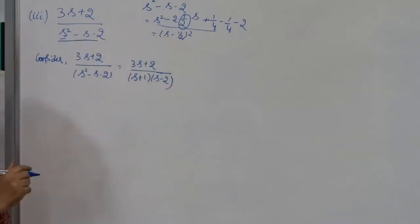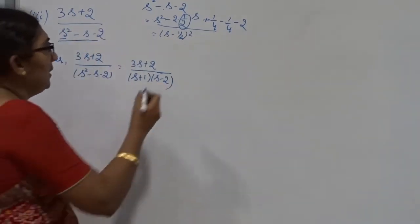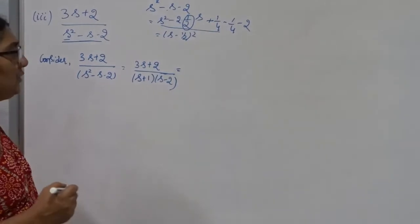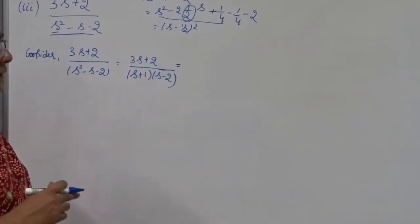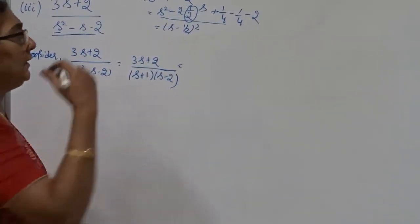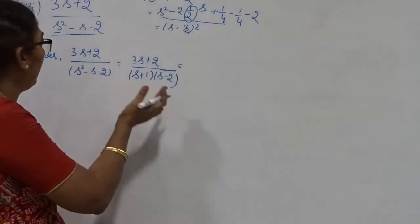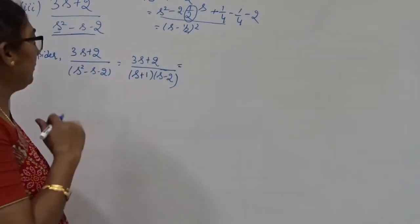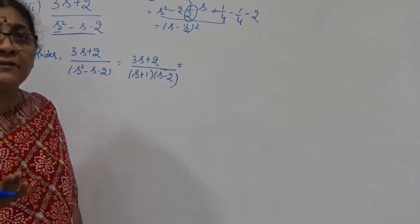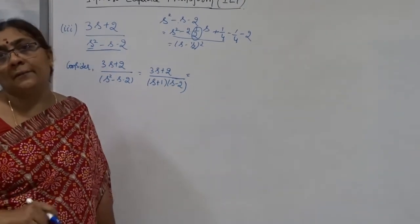Therefore, instead of using complete the square method, I go for partial fraction. My conclusion is: you just look at the fraction and decide — either you go for complete the square method or you go for partial fraction. Based on convenience, you proceed. At the end, we get the same answer.